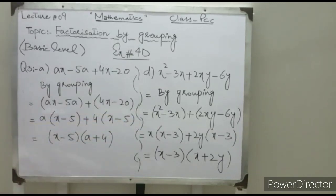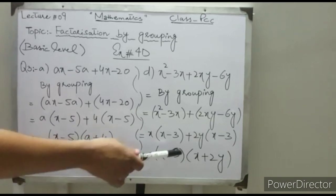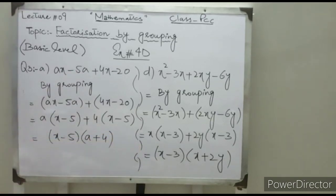In the second group, 2y is common, also leaving x minus 3. So x minus 3 is the common factor in both groups. Take it common — the final answer is (x minus 3)(x plus 2y).